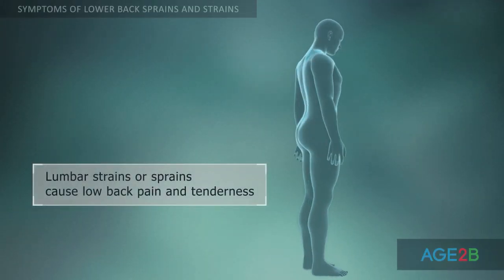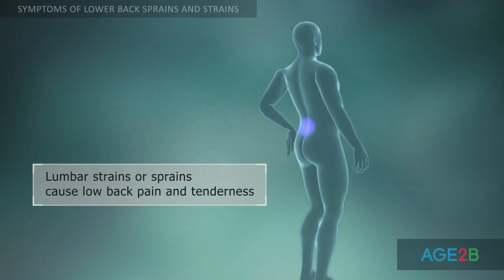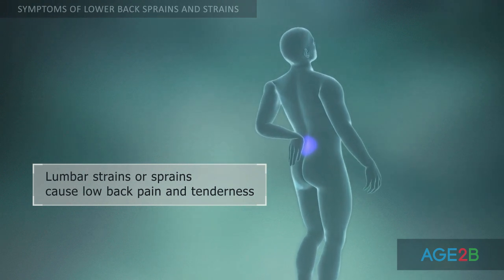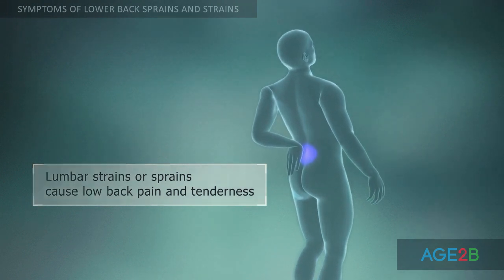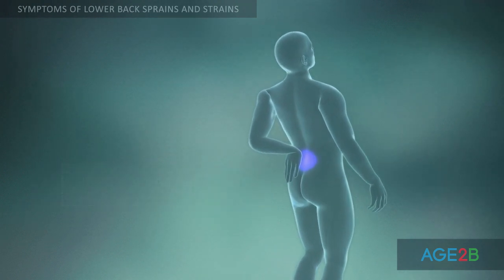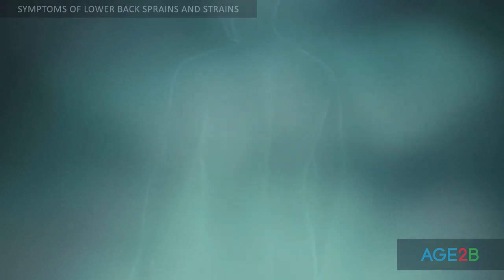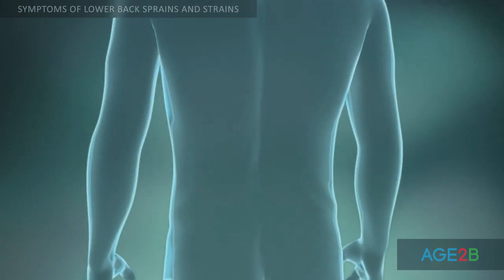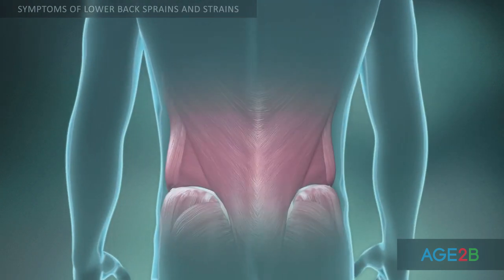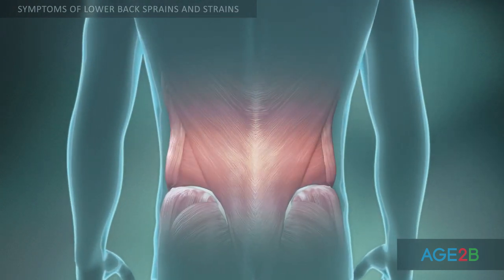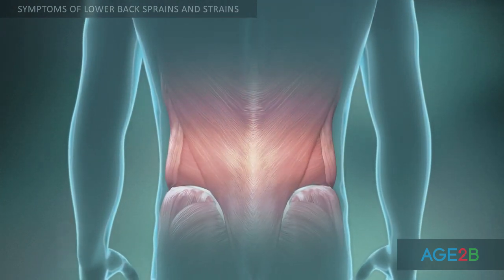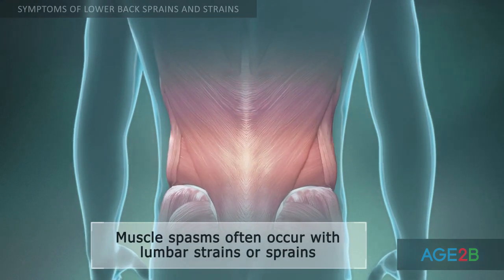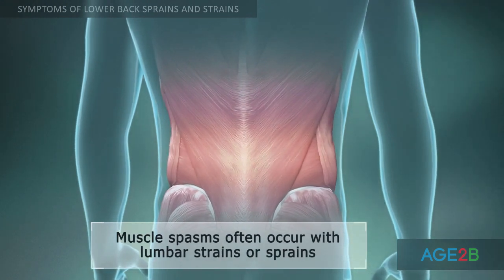Symptoms of lumbar strain or sprain often include sudden pain and tenderness in the lower back. Lumbar strains and sprains often cause muscle spasms, which occur as the body attempts to protect the injured tissues.